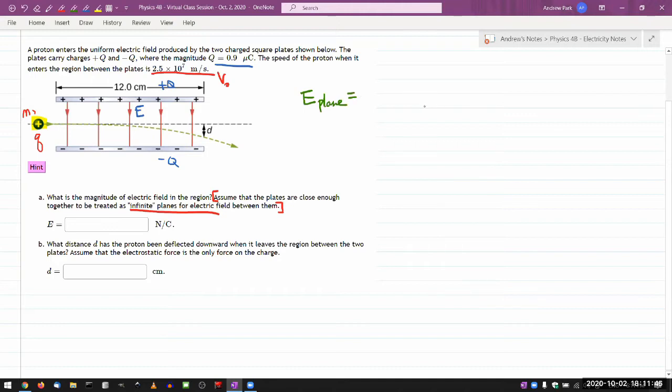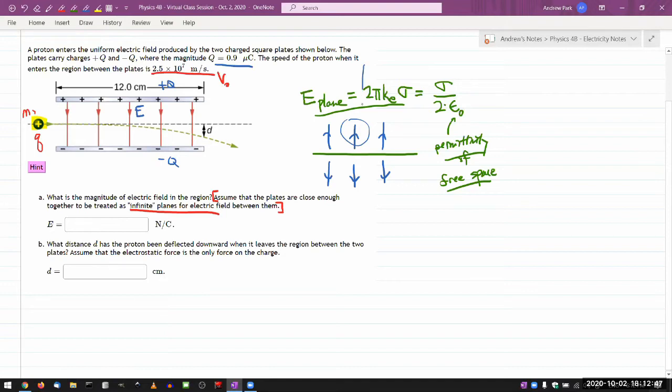So earlier in the lecture, both in Chapter 5 and Chapter 6, in Chapter 5 using direct integration, Chapter 6 using Gauss's law, we derived this formula for electric field of a plane, an infinite plane. So I'll present the formula in two different forms. One that I would prefer to present using Coulomb constant, which is 2π times Coulomb constant times the surface charge density. Or in the more common way to present it is as charge density over 2 times epsilon naught. This is what's called permittivity of free space. So that's the electric field due to a plane. The magnitude of this electric field is independent of the distance, so it produces a uniform electric field.